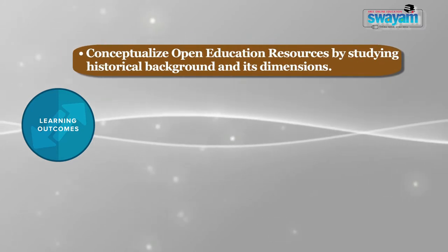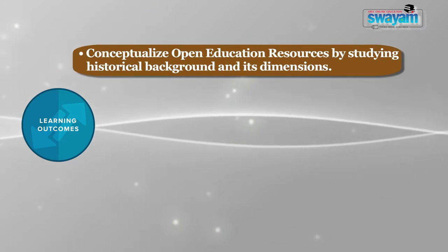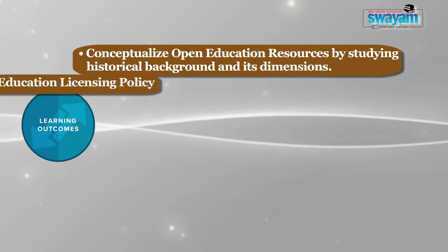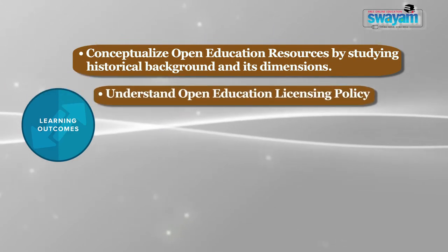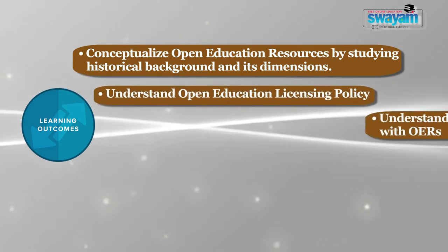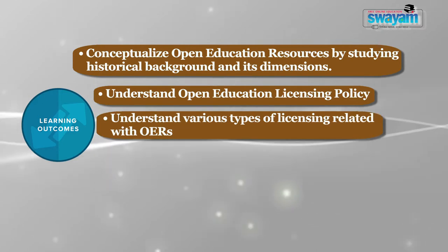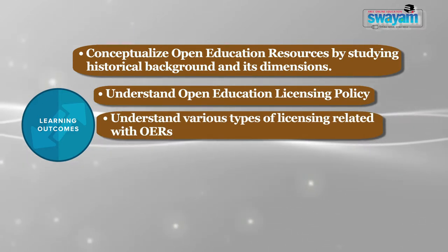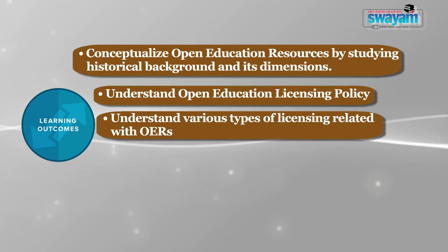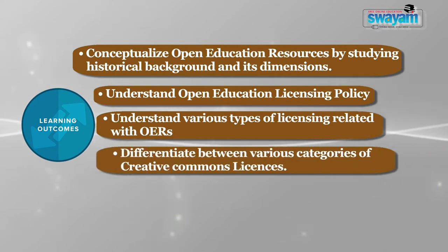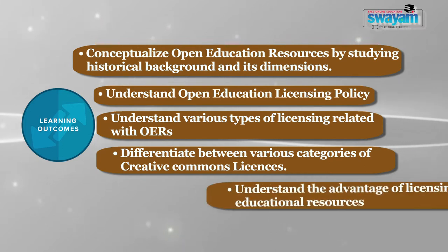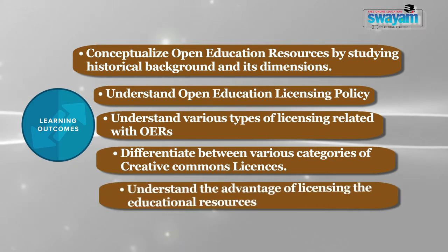The learning outcomes of this present module are: learners will be able to conceptualize Licensing of Open Educational Resources, understand Open Educational Licensing Policy, understand various types of licensing related with OERs, differentiate between various categories of Creative Commons Licenses, and understand the advantages of licensing educational resources.